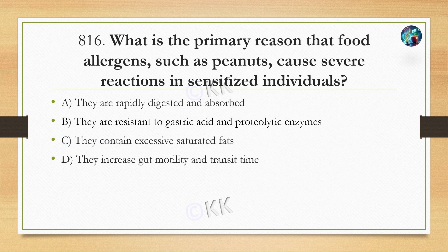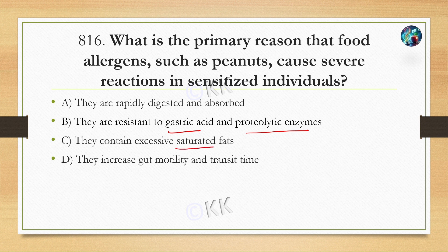What is the primary reason that food allergens such as peanut cause severe reactions in sensitized individuals? Option A: they are rapidly digested and absorbed, Option B: they are resistant to gastric acid and proteolytic enzymes, Option C: they contain excessive saturated fats, Option D: they increase gut motility and transit time.